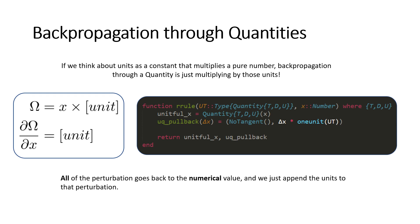One_unit just gives us the multiplicative identity with the units of the primal attached. This rule on its own composes with the scalar arithmetic rules from ChainRules.jl to immediately enable auto-differentiation with unitful quantities. All we needed to do was to make sure that we propagate the units. Without this rule, most AD systems don't quite know how to handle the units from Unitful.jl.